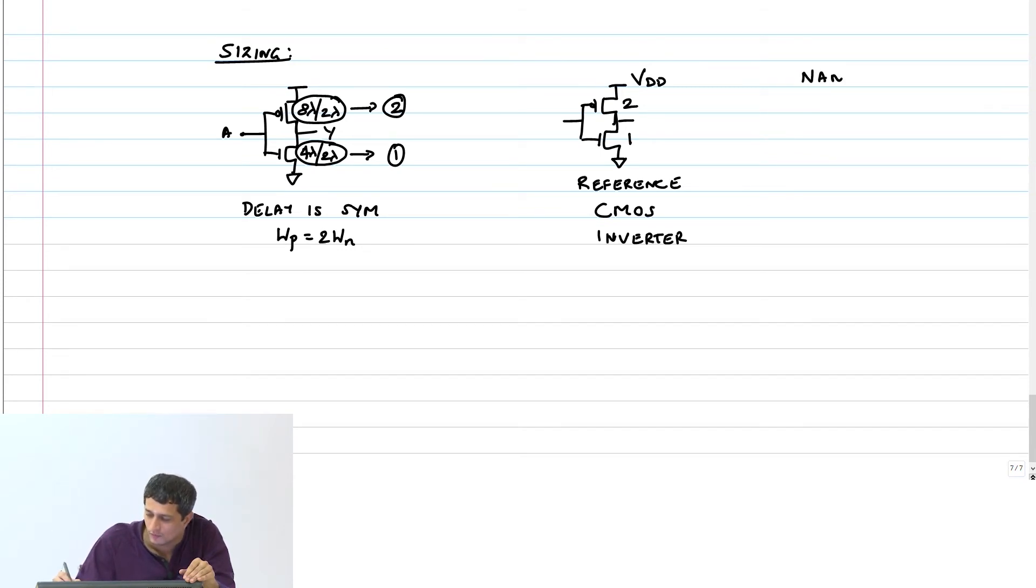This is my reference CMOS inverter because all the gates that I build from here on will be sized with reference to this inverter. So let's say now I have a NAND-2 gate, y equals AB bar. So what I am going to do is I am going to put 2 NMOS transistors in series A, B. What will be the pull-up network?